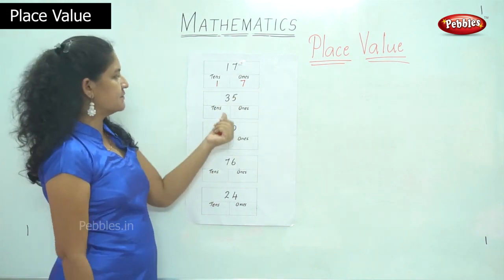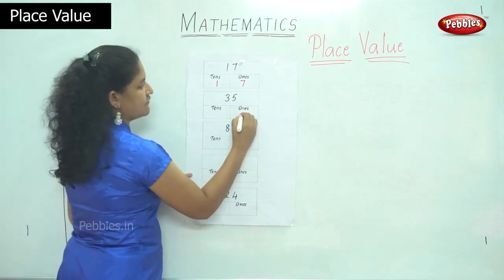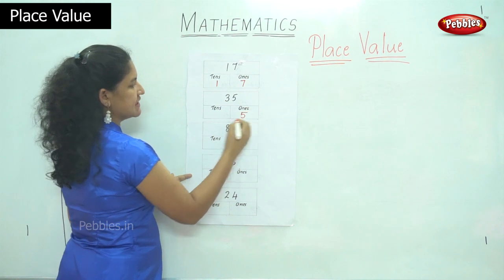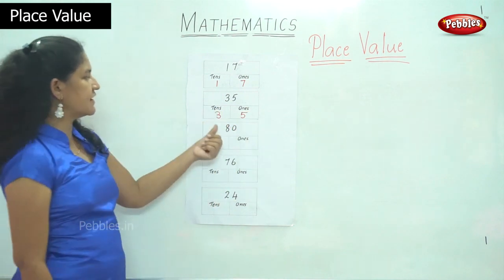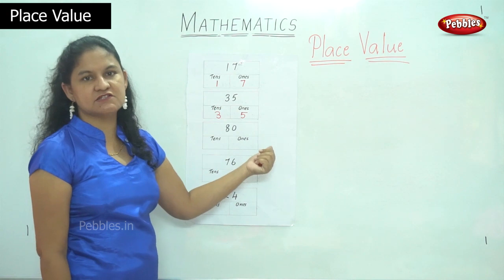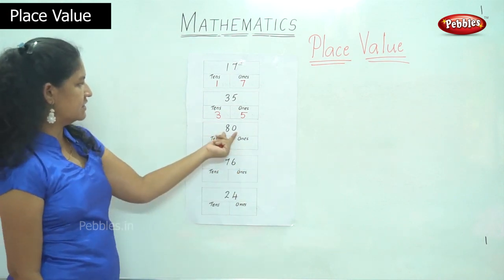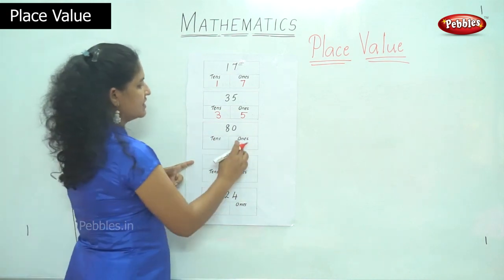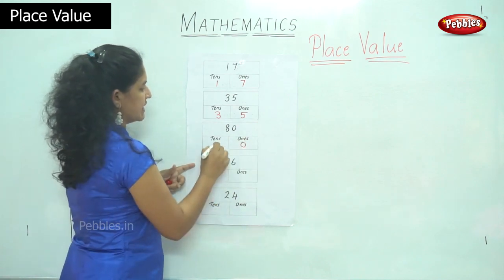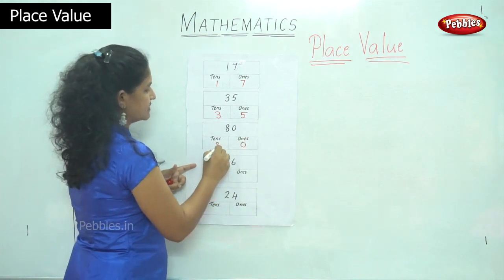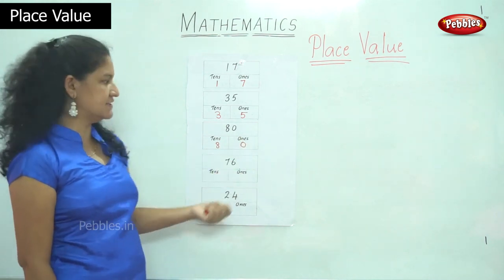The next number is 35. In the 1s place I have 5 and in the 10s place I have 3. So it is read as 3 10s, 5 1s, or 35. Next number is 80. In the 1s place I have 0 and in the 10s place I have 8. So it is 8 10s and 0 1s, or 80.